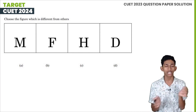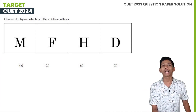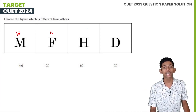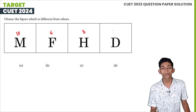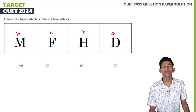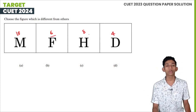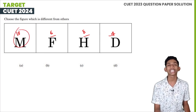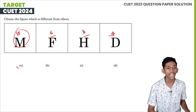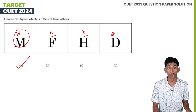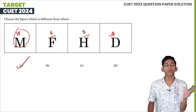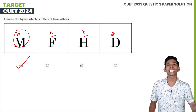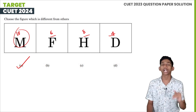We will discuss the numerical values of these letters. M is 13, F is 6, H is 8, and D is 4. If you look at these, 6, 8, and 4 are even numbers, but the number of M is 13, which is an odd number and also a prime number. So the answer is M.